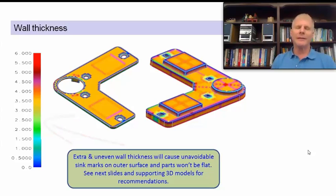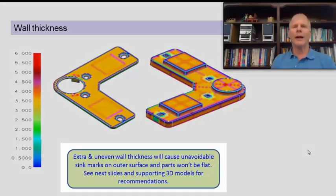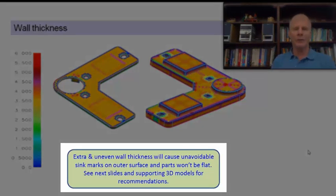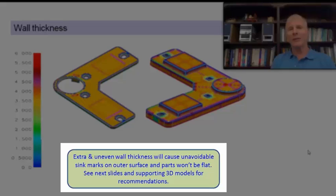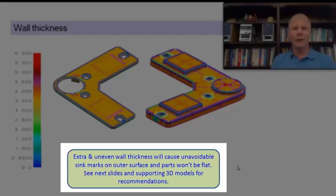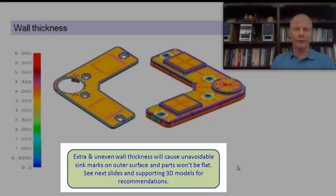The reason this is relevant is that you need to be concerned wherever you have significant rapid changes in wall thickness, as that can lead to poor flow of material and it can also lead to warp, which basically means the parts are not going to lie flat — which is the comment made down here in this section. In addition, even if you do have uniform wall thicknesses but the walls are too thick, you can end up with sink and voids.